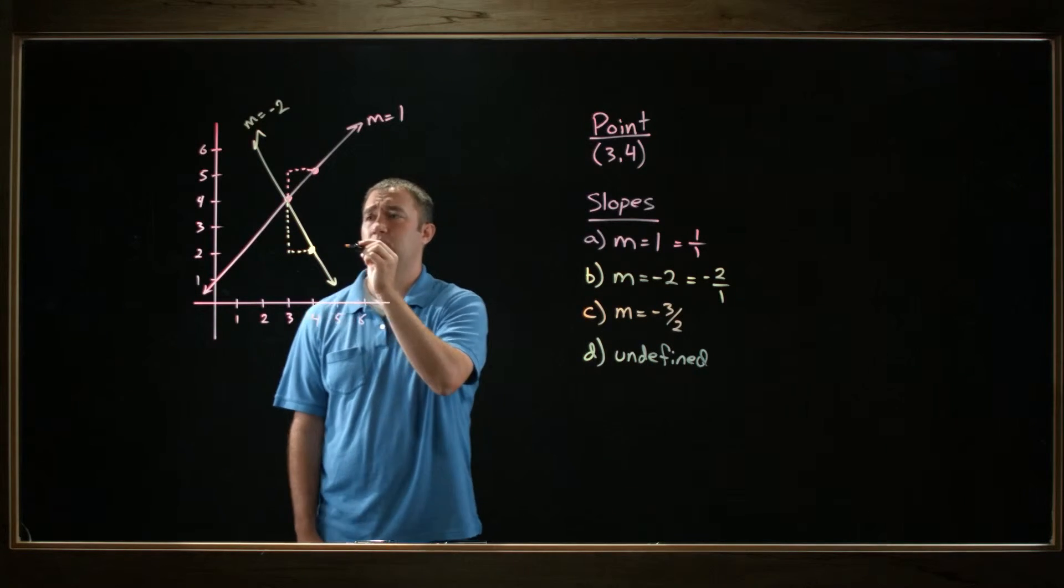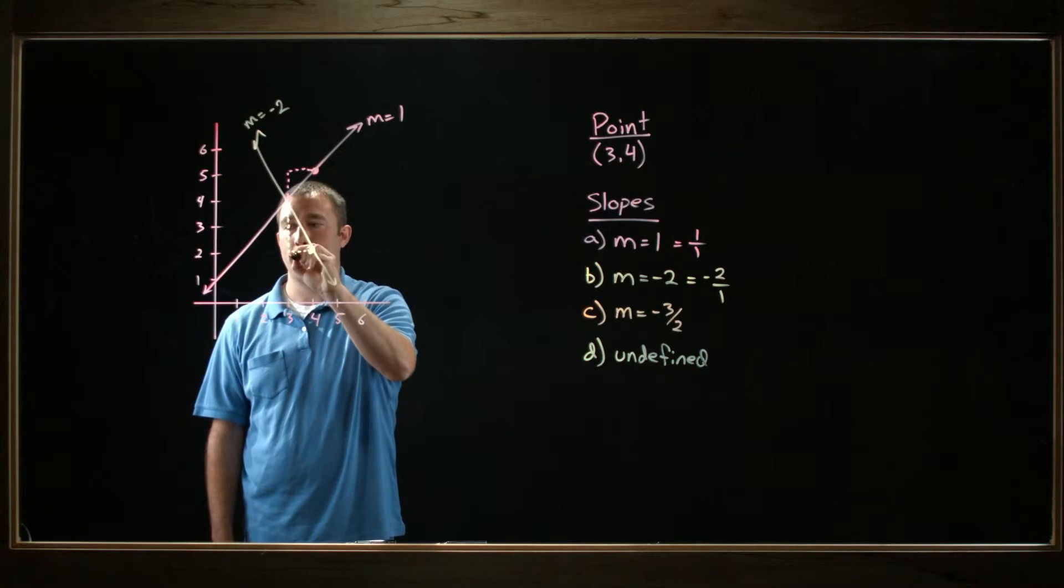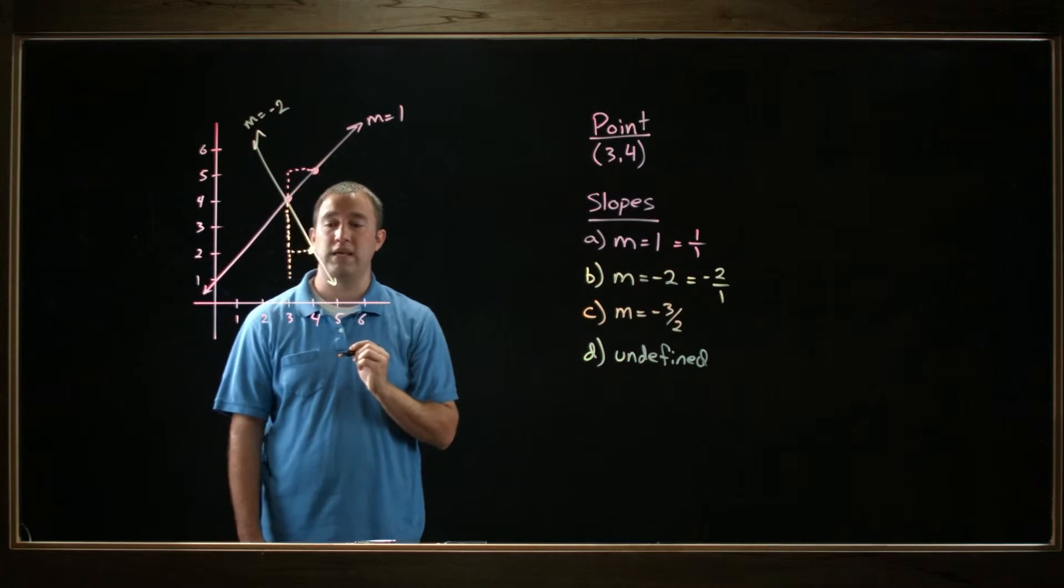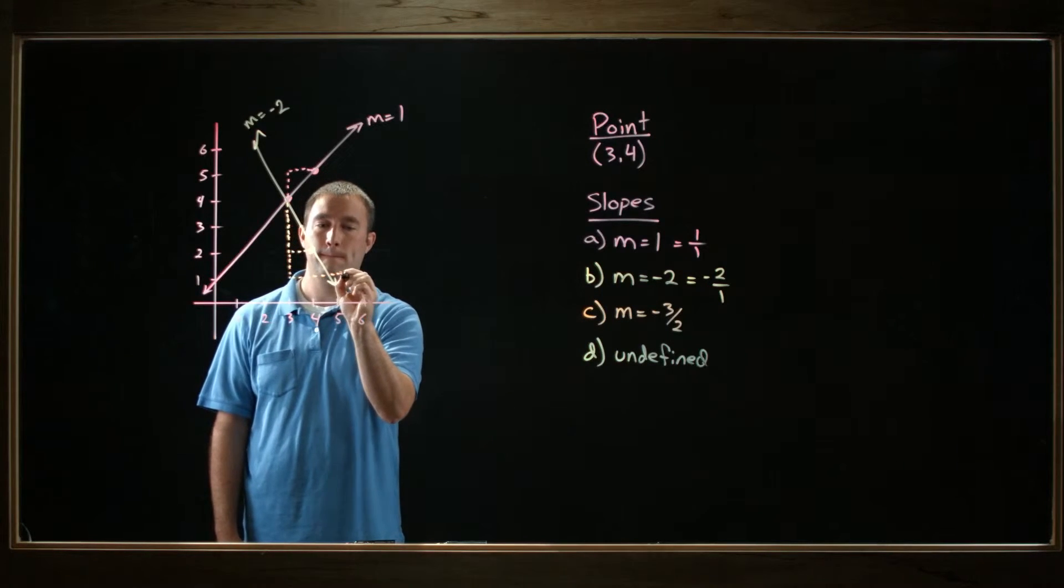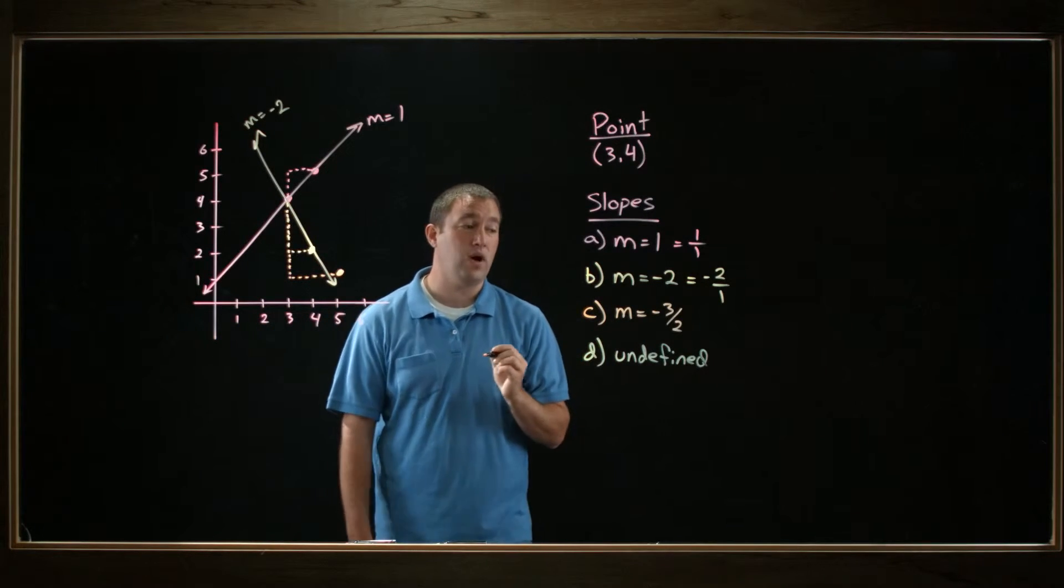So I'll start from my point and I'll go down 3 all the way down here to y equals 1, and I'll go over 2 to this point right here, (5, 1).